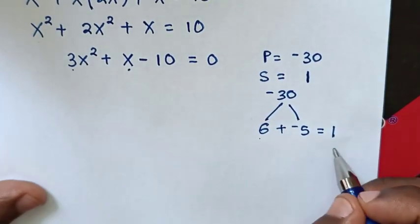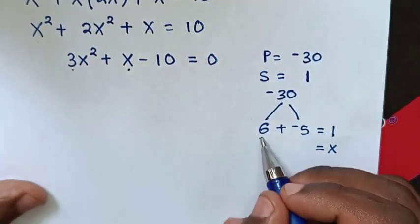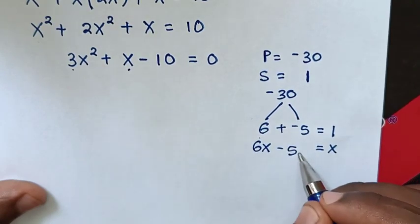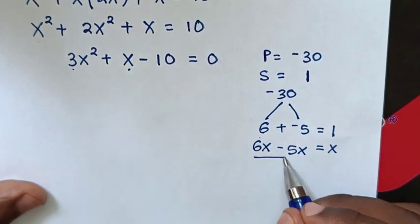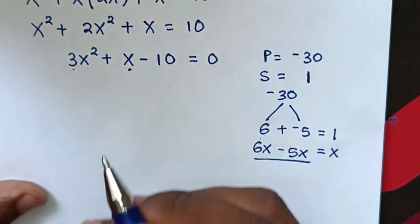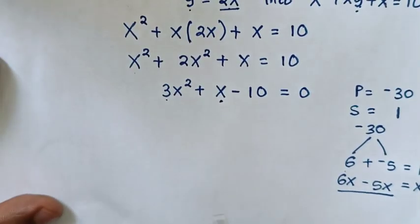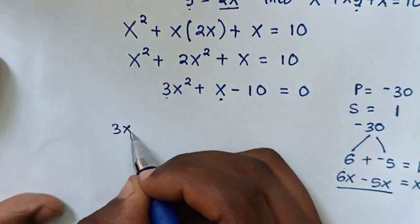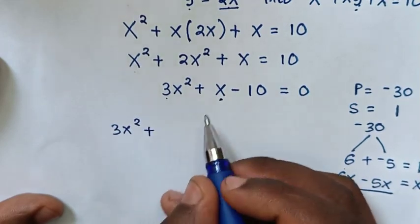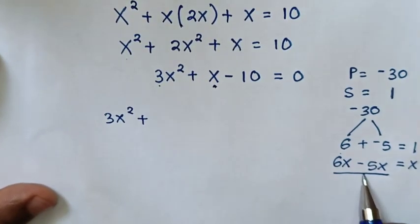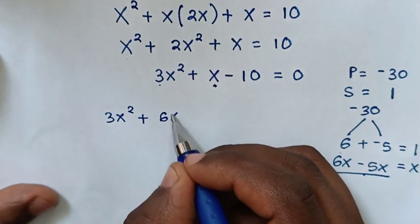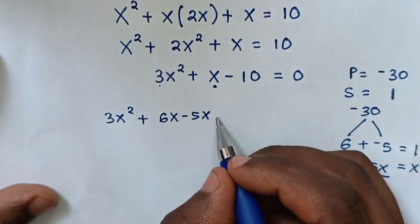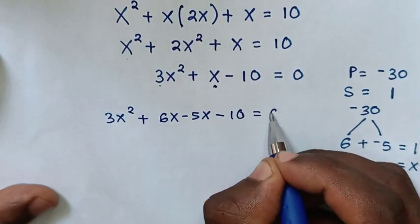From our equation, we substitute x as 6x minus 5x into the equation. Then our equation will be 3x squared plus 6x minus 5x minus 10 is equal to 0.